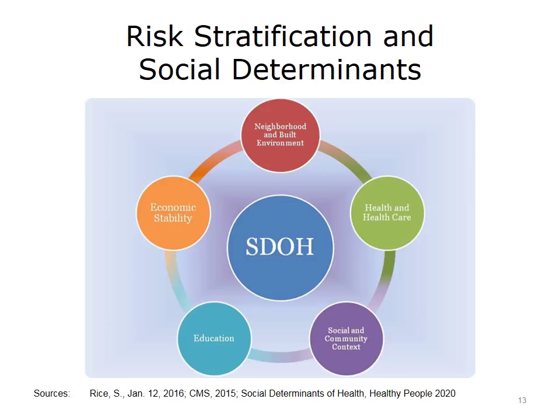In designing value-based outcomes and reimbursement models, accounting for social determinants of health is difficult. CMS has been criticized for using quality metrics that may unfairly penalize hospitals and providers in low-income areas. Recently, CMS announced an initiative — the Accountable Health Communities Model — meant to improve health outcomes by promoting collaboration between clinical health care and community social support organizations. In addition, the National Quality Forum, or NQF, is examining the role of socioeconomic factors in quality measures. For those interested in seeing social determinants data at a state and county level, the County Health Rankings and Roadmaps Program, a collaboration between the Robert Wood Johnson Foundation and the University of Wisconsin Population Health Institute, provides a wealth of information.